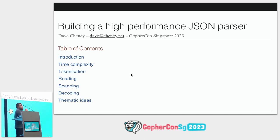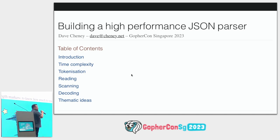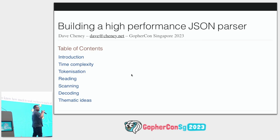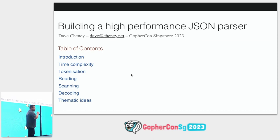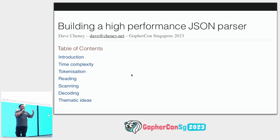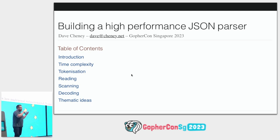The second goal is being reasonably compatible with the encoding/json parser. We want to support the same high-level JSON decode API, and also offer an alternative that has lower allocations and is more efficient.